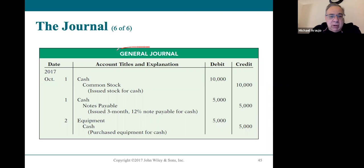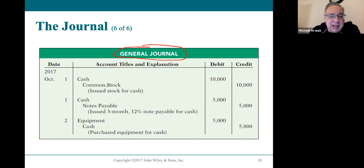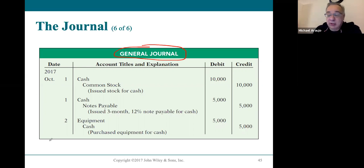From Learning Objective 3, we learned about the general journal and all the journal entries that occur. These are a few of the journal entries for Sierra Corporation: when they issued cash for common stock, cash got a debit and common stock got a credit. When they borrowed money, they got $5,000 in cash and now have a note payable — debit cash, credit note payable. Then they used that cash to buy equipment: $5,000 debit to equipment and $5,000 credit to cash.